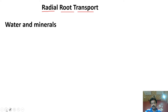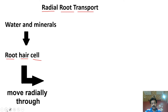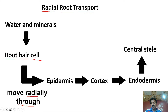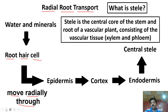Water اور mineral radial root transport میں سب سے پہلے اندر آئیں گے root hair cell سے، اور پھر move کریں گے radially through concentric layers۔ سب سے پہلے cross کریں گے epidermis، پھر cortex، پھر endodermis، اور finally central steel میں جائیں گے۔ Steel is the central core mass of the stem and root of a vascular plant, consisting of vascular tissues — xylem اور phloem۔